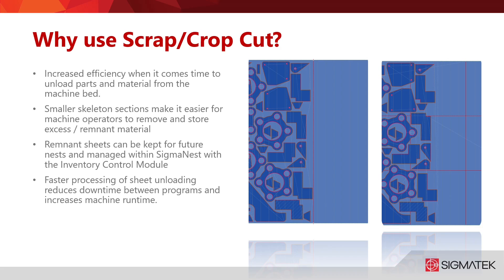The smaller skeleton sections make it easier for the machine operators to remove and store that excess or remnant material. Those remnant sheets can be kept for future nests and managed within SigmaNest if you have the inventory control module. The faster processing of sheet unloading reduces the downtime between your programs and really increases machine run time.